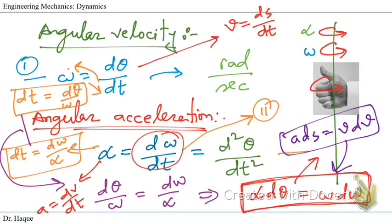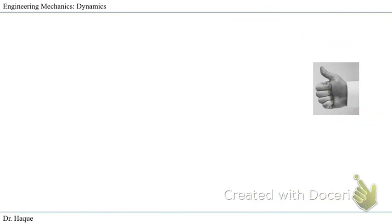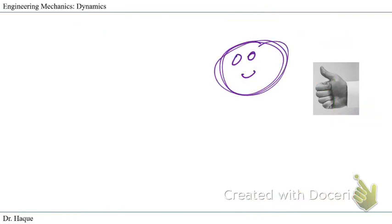These are the basic definitions we need to know before we start studying rotation about a fixed axis. In the next part of the lecture on rotation about a fixed axis, we're going to talk about the equations we need to apply. Thank you, see you in the second part of this lecture.